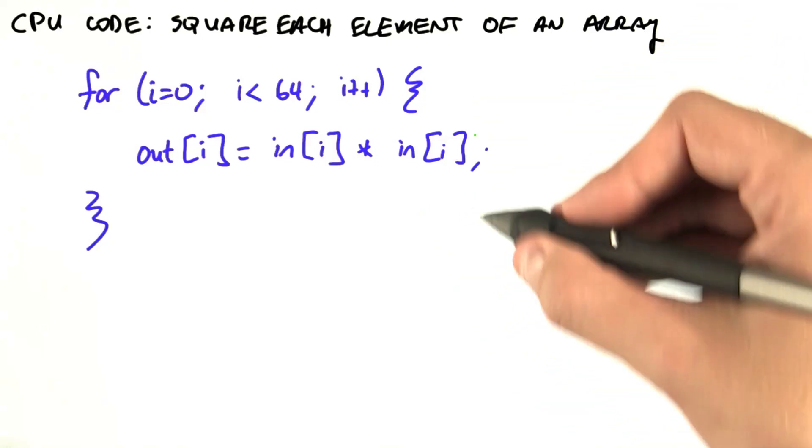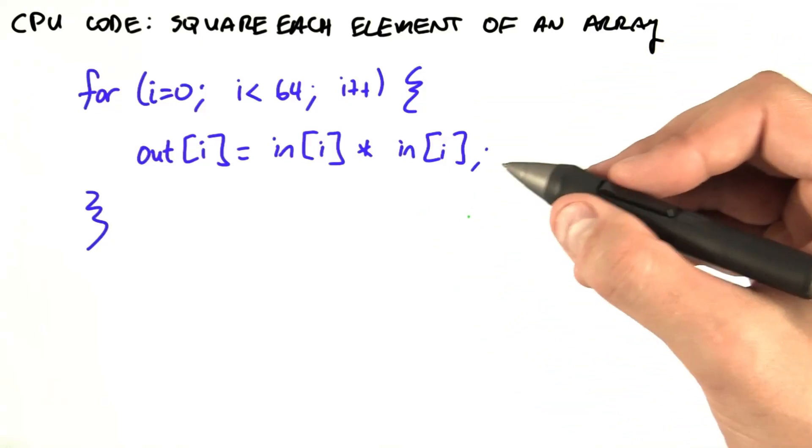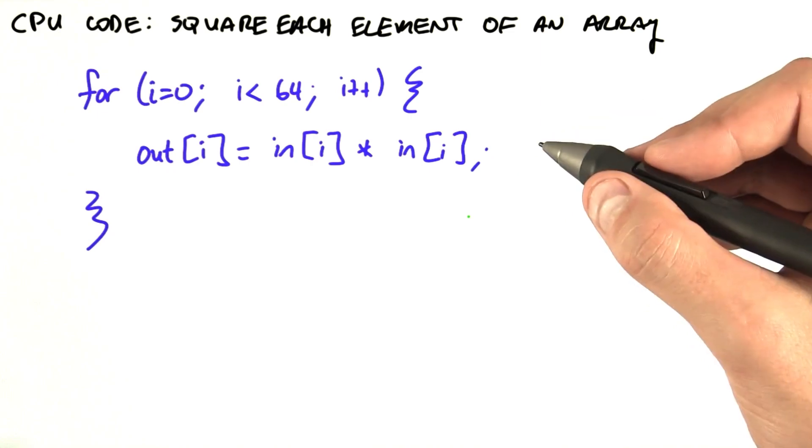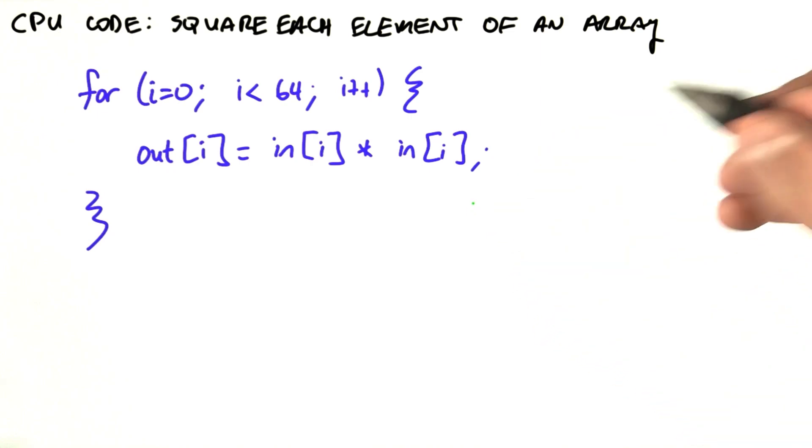For the CPU code, we'll actually just look at three lines of C source code without worrying about details like allocating memory or initializing the array. So here's our code.